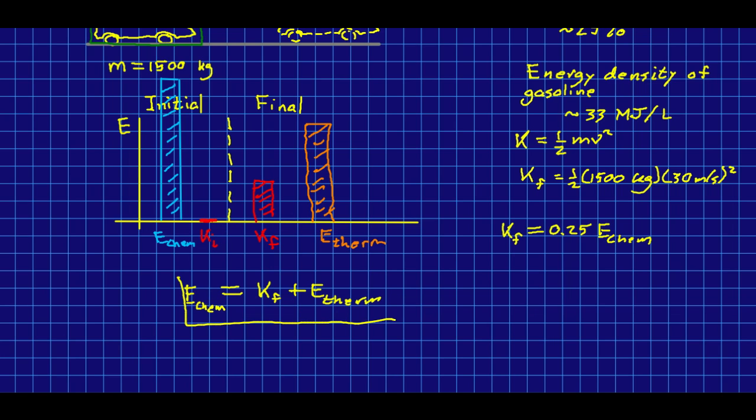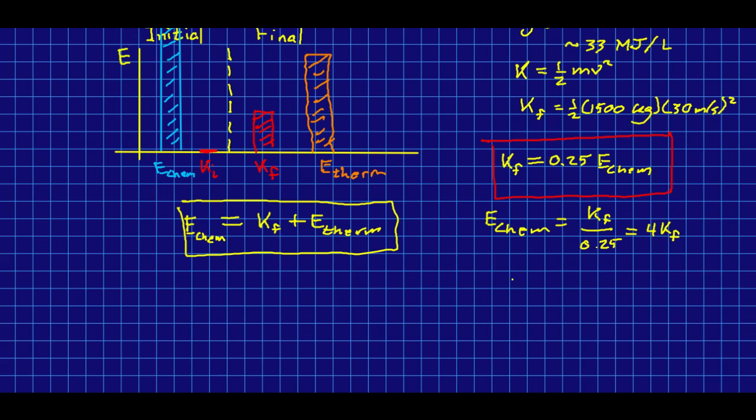This is now enough information. This equation is now telling us where the rest goes. So, let's work from here. Because, what we really want is that chemical energy. So, there we go. Our chemical energy, in the end, is just our kinetic energy final. Or, sorry, our initial chemical energy is our final kinetic energy over 0.25. Or, in other words, it's four times our final kinetic energy. And, so, we can find our chemical energy. It's just four times a half mv squared.